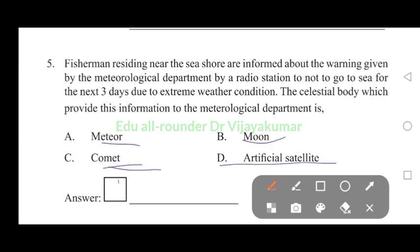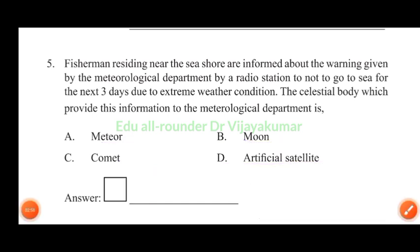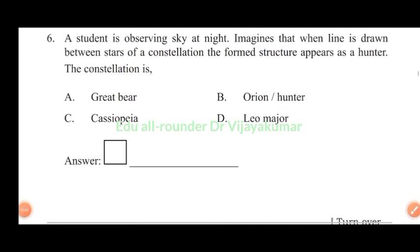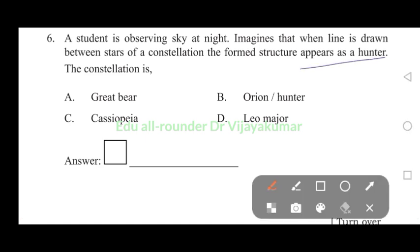A student is observing sky at night, imagines that when a line is drawn between stars of a constellation, the formed structure appears as a hunter. The constellation is - the answer is in the question itself. The structure appears as a hunter. Therefore, the answer is Orion, hunter. Answer B is the correct.